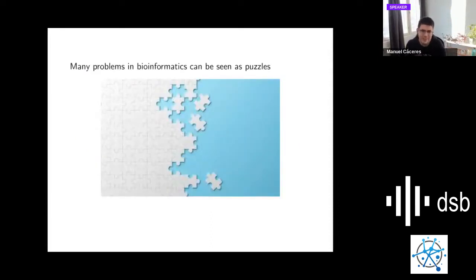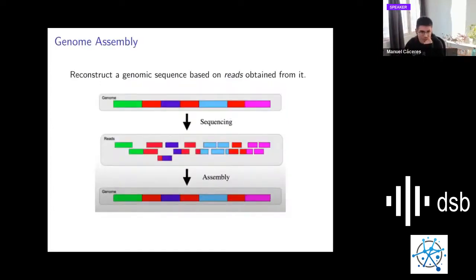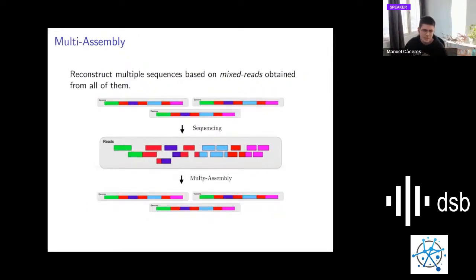Many problems in bioinformatics can be seen as puzzles, where we have only the pieces and the objective is to build the entire puzzle. For example, genome assembly that we have discussed here extensively. We have reads of some hidden genome that we don't know, and we want to reconstruct this genome from these reads.